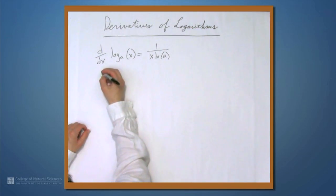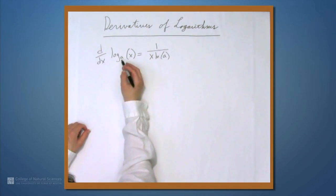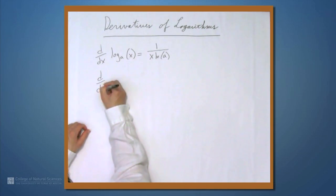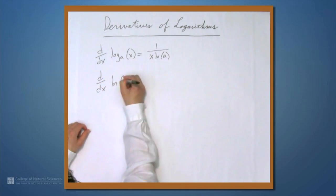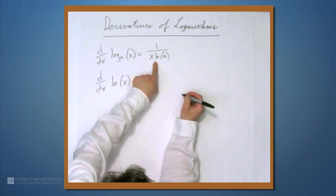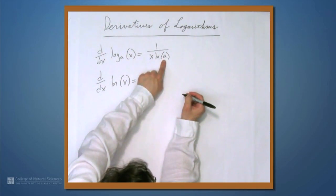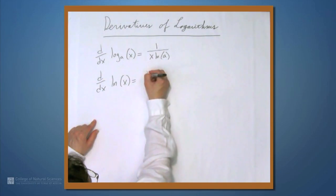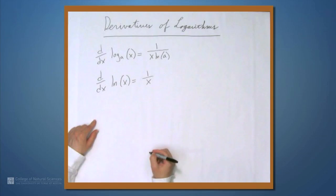And this has a specific version when a is e, so the derivative of the natural log of x, in other words, is going to be 1 over x times the natural log of e, but the natural log of e is just 1. So the derivative of the natural log of x is 1 over x.